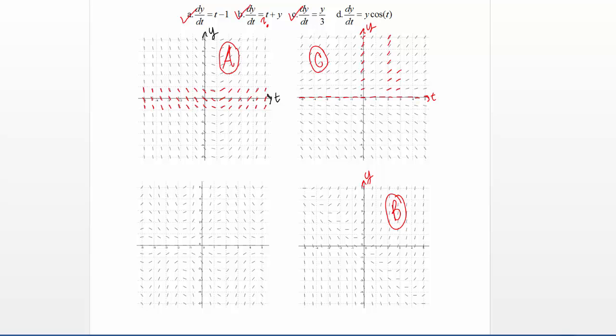But then, what we probably want to do is just make sure that our final one, D, actually matches up with this third direction field that we have left. So differential equation D is dy/dt equals y times cosine t. So let's look at this direction field.